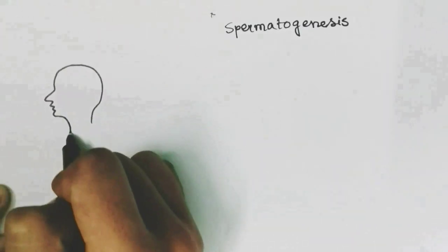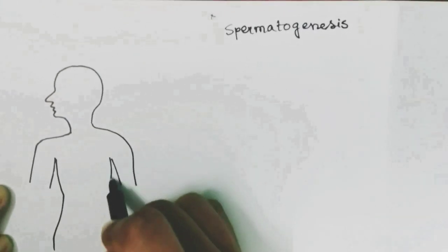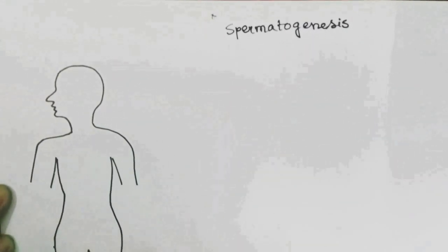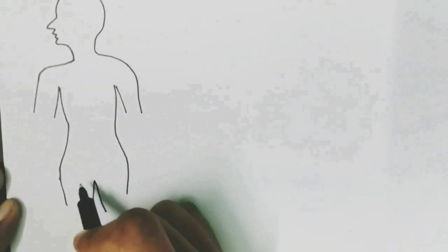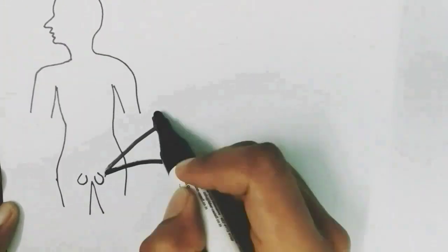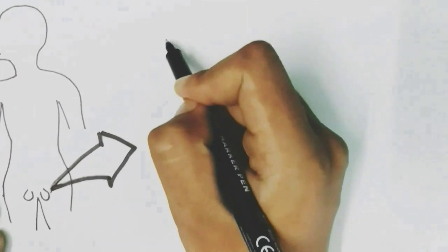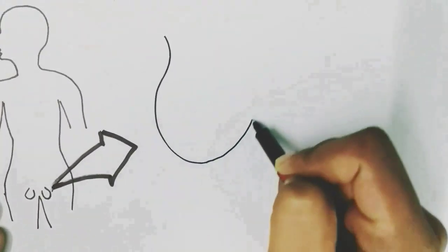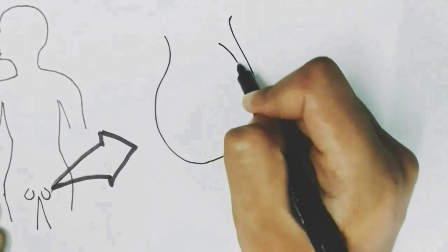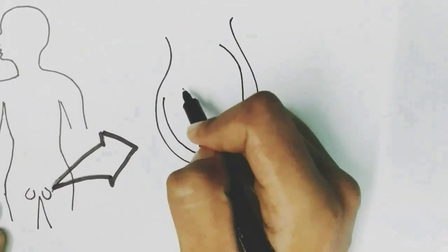In this video we are going to talk about spermatogenesis, that is sperm production. Sperms are male gametes formed inside the male gonad — the testes. We will zoom into the testes to understand where sperms are produced.